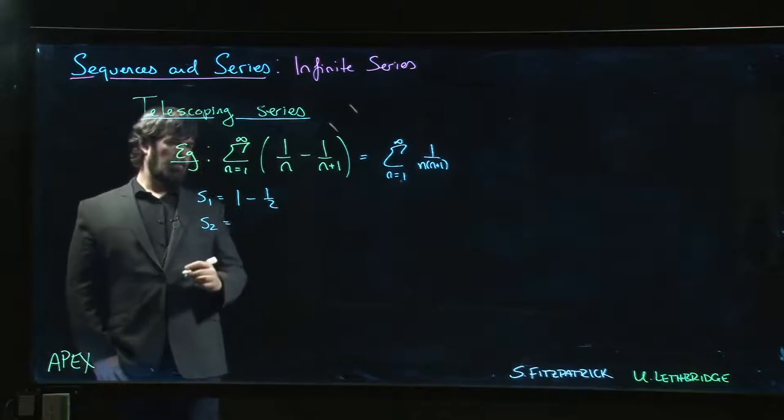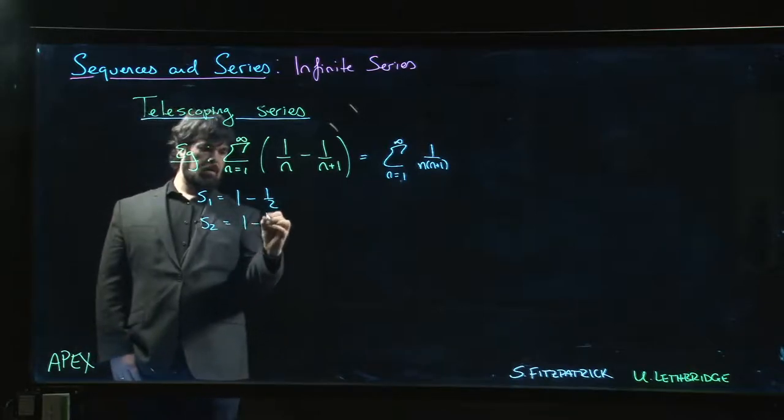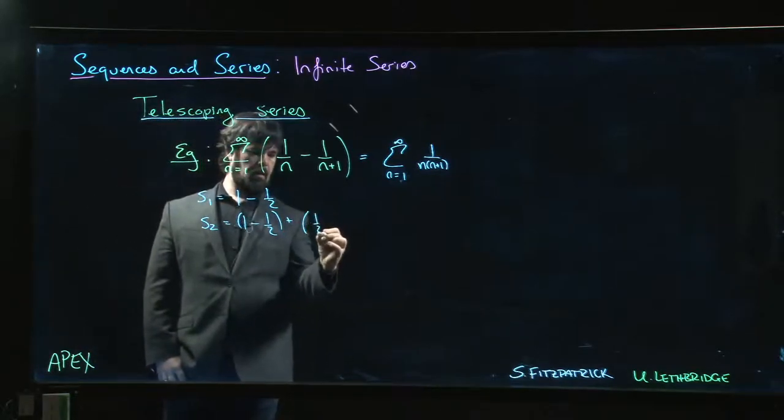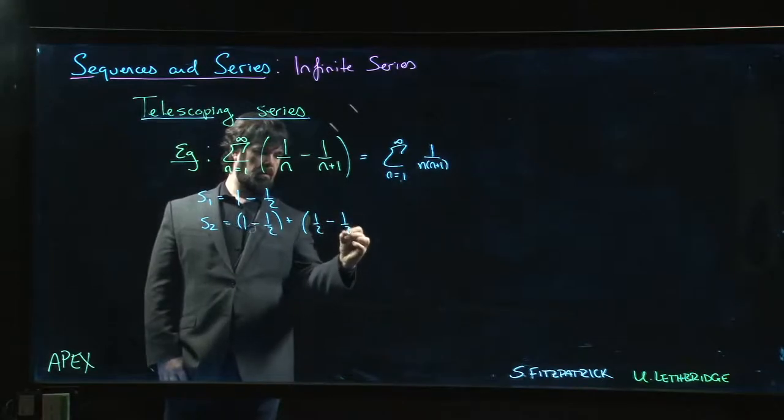S2, we get 1 minus 1 half. There's the n equals 1 term. Now we add the n equals 2 term, 1 half minus 1 third.